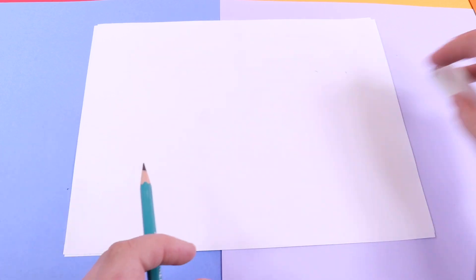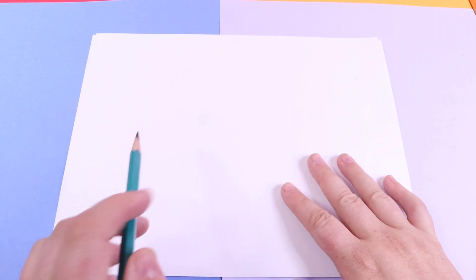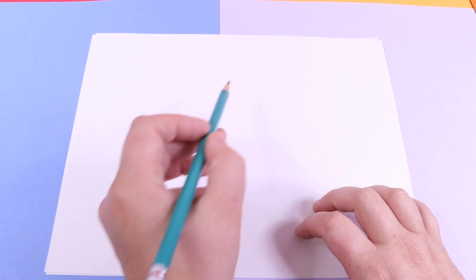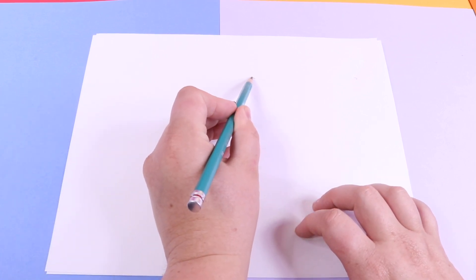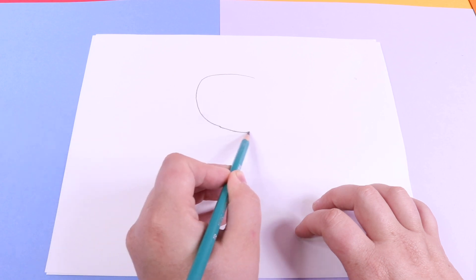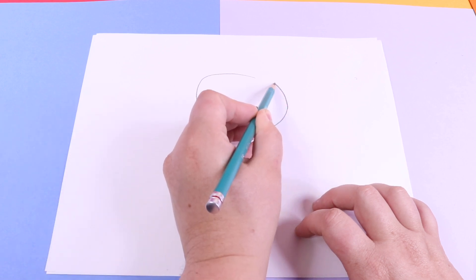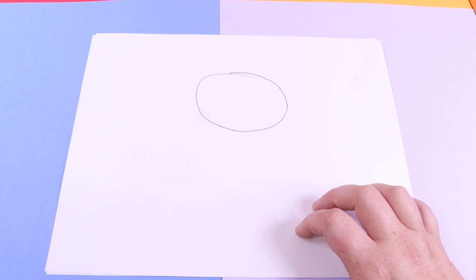To get started, let's start with drawing the shape of the head. And usually the shape of the head is just a little oval, like this. Okay, perfect.